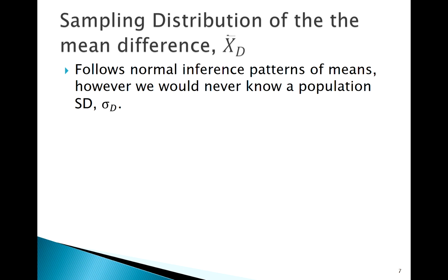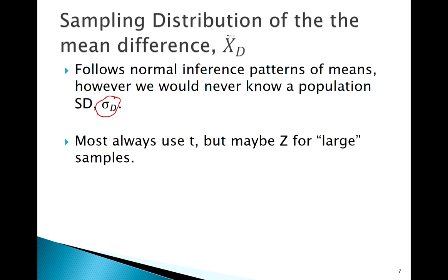It follows the typical logic that we think about that we already have in place to deal with means. We know if the central limit theorem holds we can use z. But technically, in order to use z we need to know the population standard deviation.